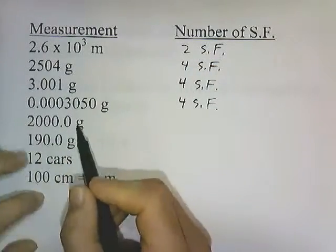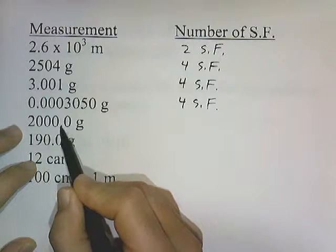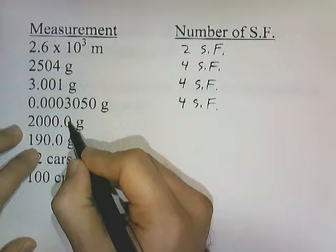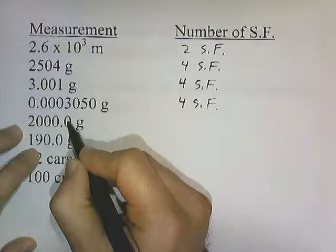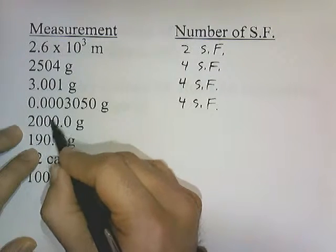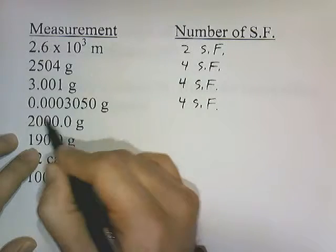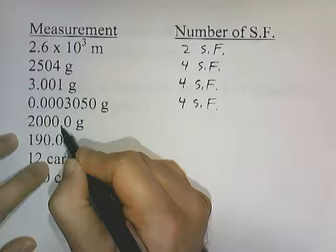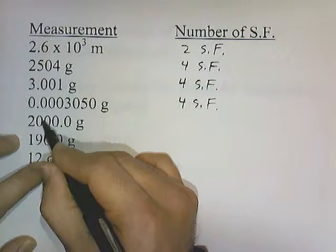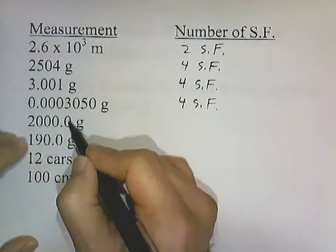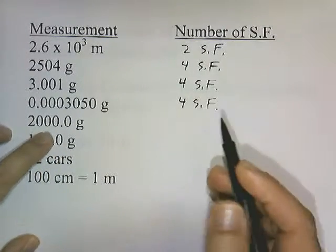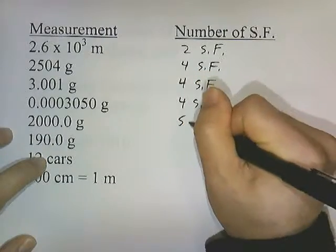This is a trickier one. This zero is behind the decimal and behind the number, so it counts. Once we've established that this zero is a significant digit, we treat it like a regular number. That means these zeros in between are between two significant digits, so they count too. This zero counts because it's behind a decimal and behind the number, and these zeros in between count because they are between two significant digits: 5 significant figures.